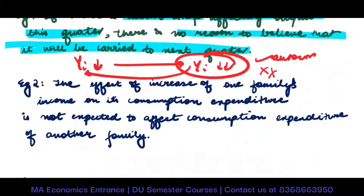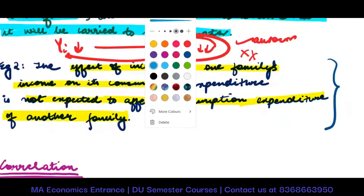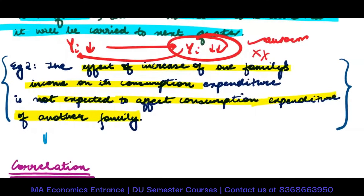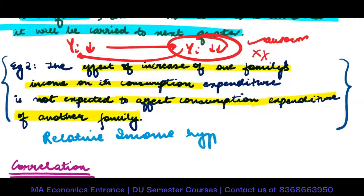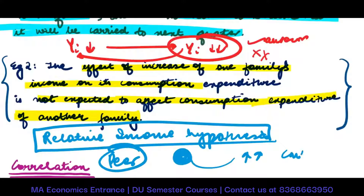Take another example: the effect of an increase in one family's income on its consumption is not expected to affect the consumption expenditure of another family, so there is no autocorrelation. However, there is a theory in macroeconomics known as the relative income hypothesis — it suggests that if your friends are spending more, you will also spend more, so your consumption will also increase. That means there will be autocorrelation.